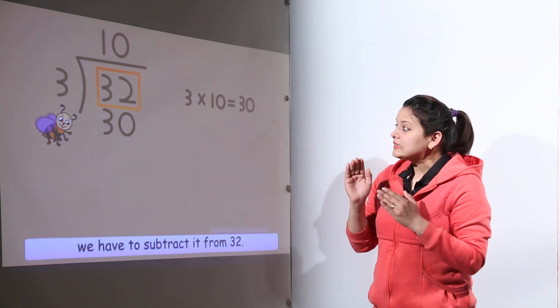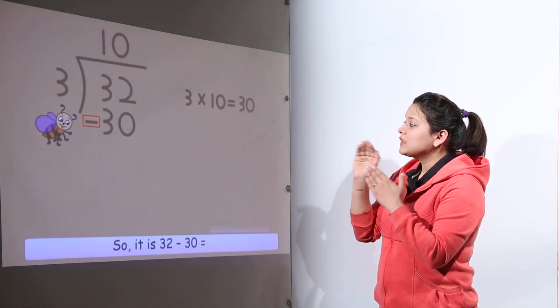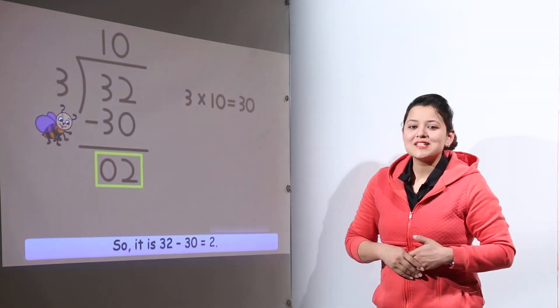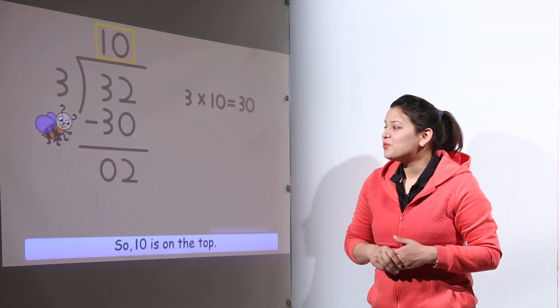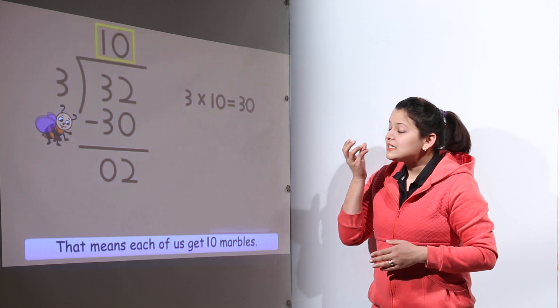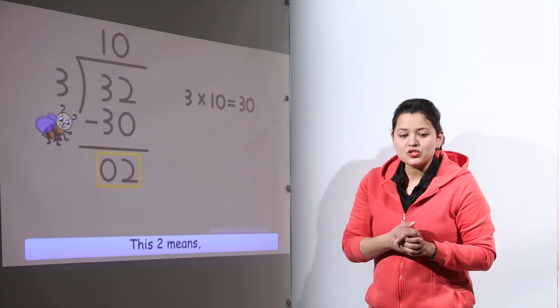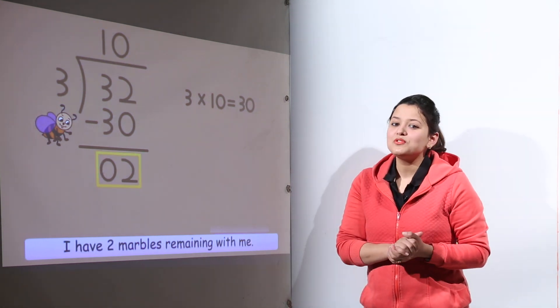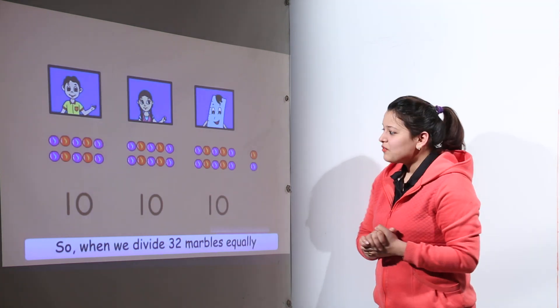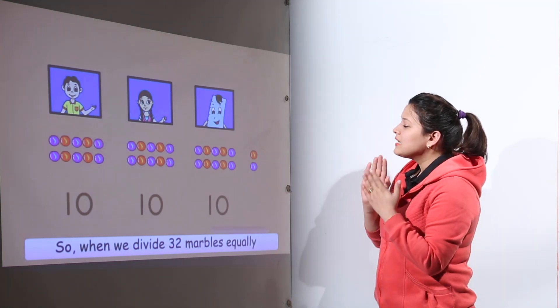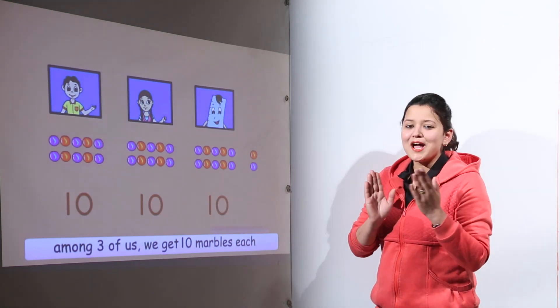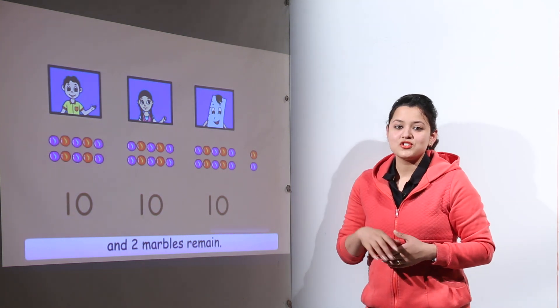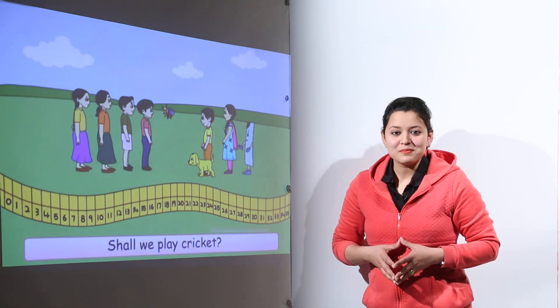Now we have to subtract 30 from 32. So 32 minus 30 gives us the remainder 2. So we can say that we have 10 marbles divided to each of the 3. And then the 2 remaining marbles will be left. Right? So we have the conclusion. 10 marbles to each and 2 will be left after the division of total 32 marbles.